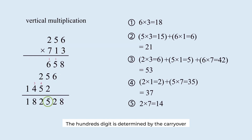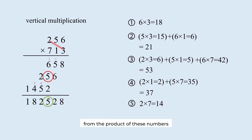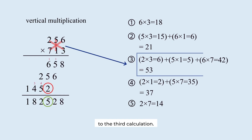The hundreds digit is determined by the carryover from the tens digit and these numbers. This number is the result of the product of these numbers, this number from the product of these numbers, and this number from the product of these numbers. This step corresponds to the third calculation.